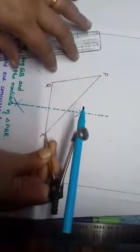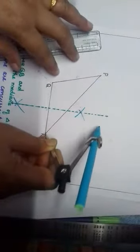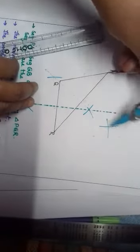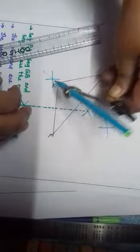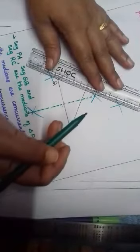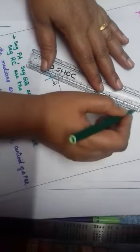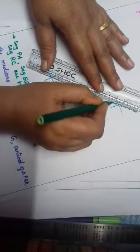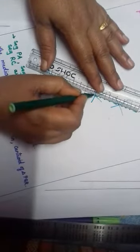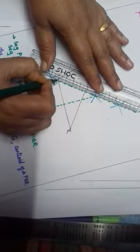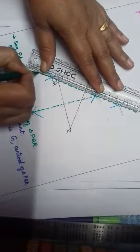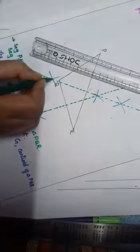Now let us draw the perpendicular bisector of PR. Take more than half distance and draw two arcs on both sides — from R as well as from P. Then join the intersecting arcs by using a dotted line. Here also we have drawn one dotted line to join these intersecting arcs.